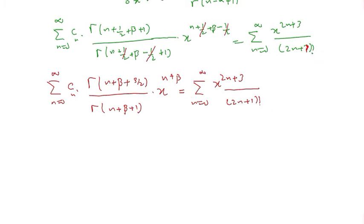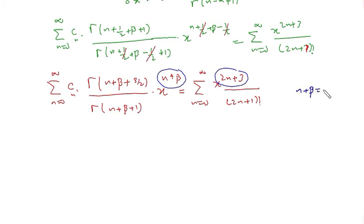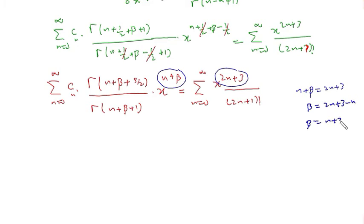Now in order to compare the series we need to make the powers of x the same. So I compare: n plus beta equals 2n plus 3, which gives beta equals 2n plus 3 minus n, so beta equals n plus 3.